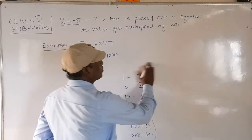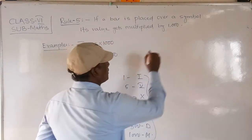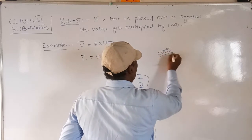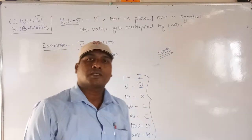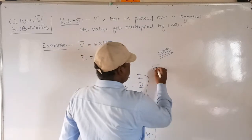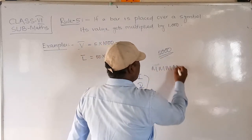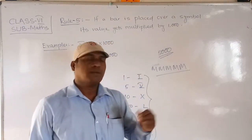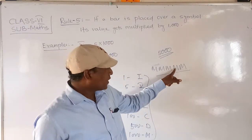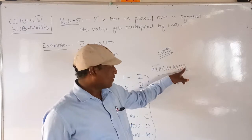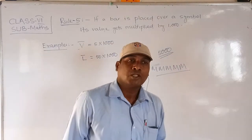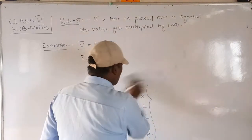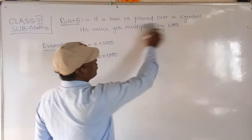Suppose 5000 — how would you write it? You can't just write M, M, M, M, M like that, because maximum 3 times only we can repeat a symbol. So whenever the value 5000 comes, to solve this problem, we follow Rule 5.